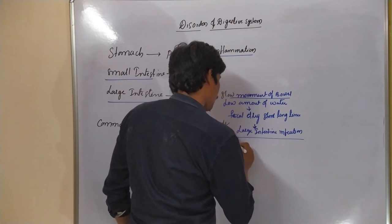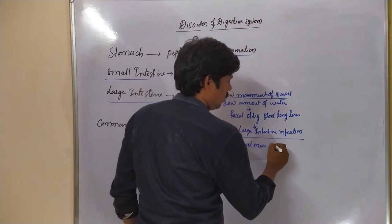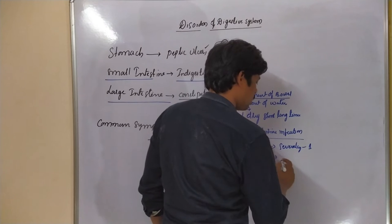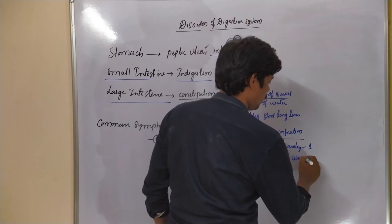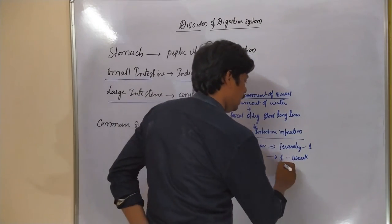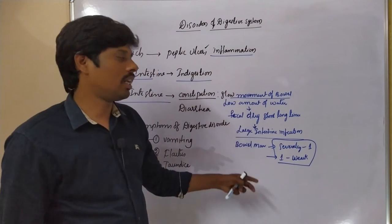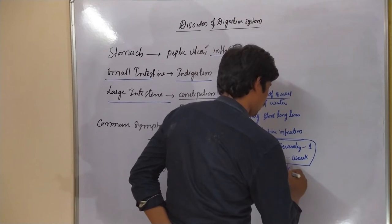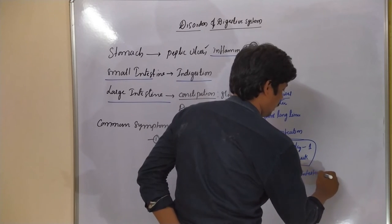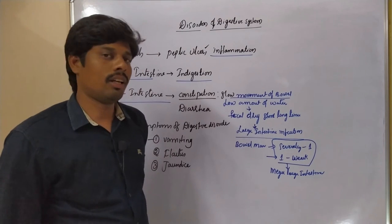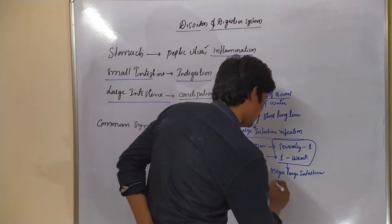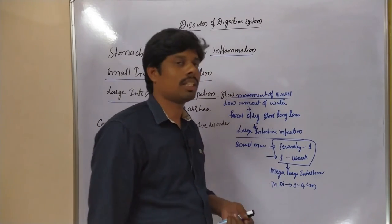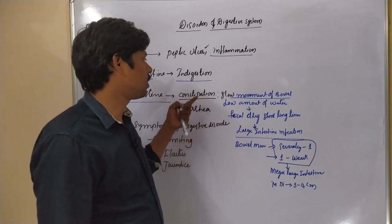During constipation, bowel movement can take place only once in several days or even once a week. Due to excess storage of fecal matter in the large intestine over a week, the diameter of the large intestine increases by 3 to 4 centimeters — this is called mega large intestine.